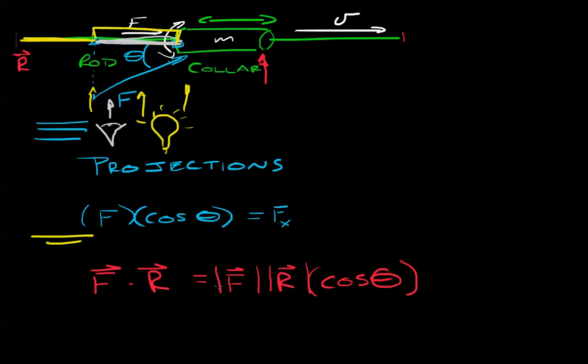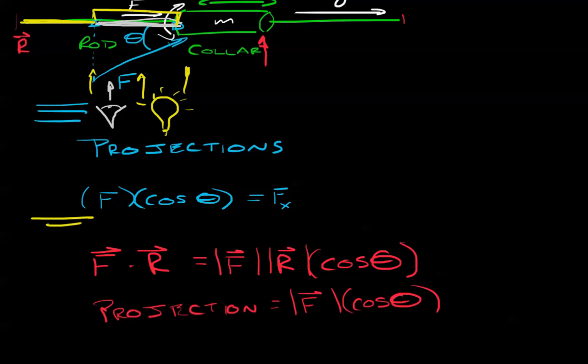To get this into a usable form, we're going to have to play with it a little bit. We know that, in this case, we know what the projection is. We know that the projection is the magnitude of F times cosine theta. We know that by looking at the problem. We're going to try and figure out if we can get that by itself.